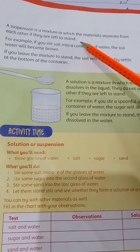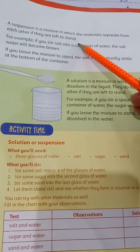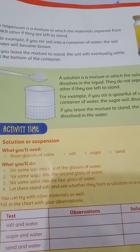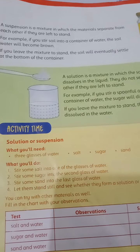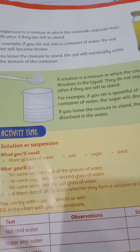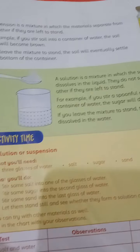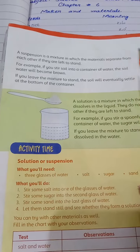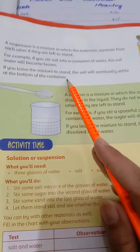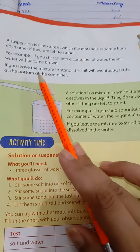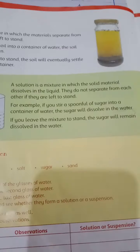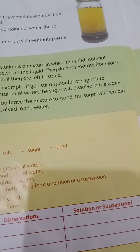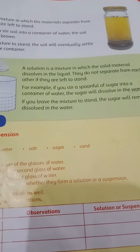A suspension is a mixture in which the materials separate from each other if left to stand. For example, if you mix soil into a container of water, the water will turn brown. But if you leave the mixture to stand for a little while, the soil will eventually settle down to the bottom of the container and the water will become clearer above it.